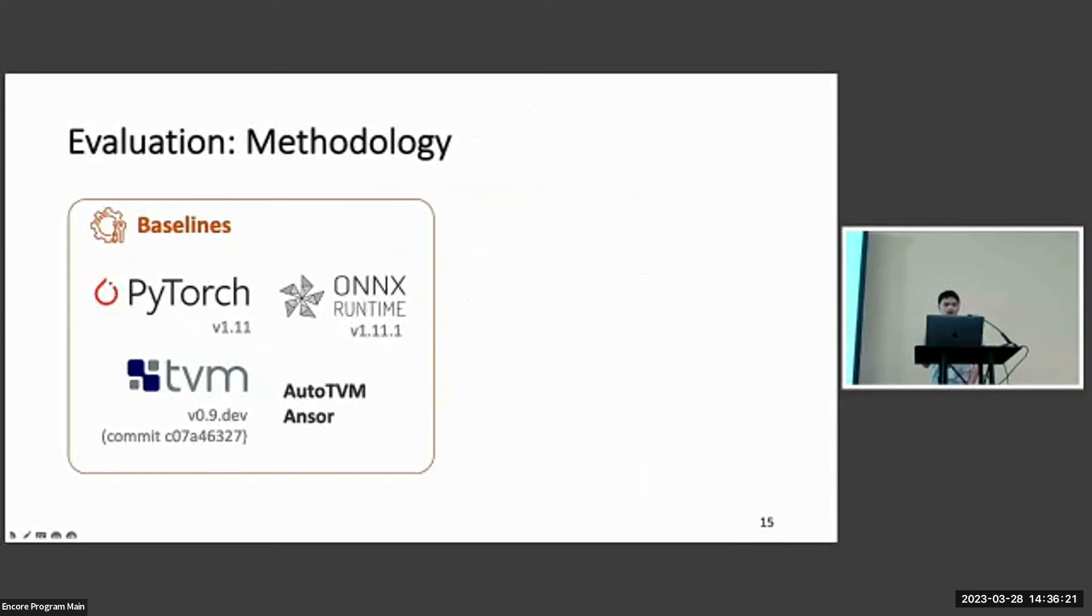To evaluate Hidet, we compare Hidet with PyTorch, which is a commonly used training framework, and ONNX Runtime, which is a highly optimized inference library. Both of them will use manually written kernels and vendor libraries. And we also compare Hidet with TVM, which is a state-of-the-art deep learning compiler equipped with two schedulers, AutoTVM and Ansor.